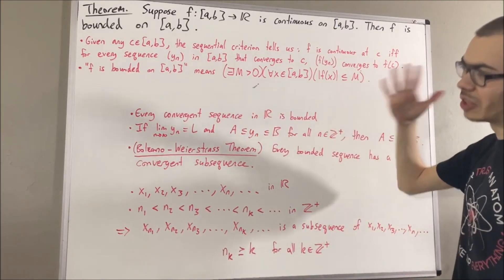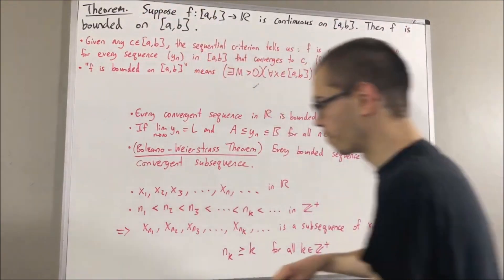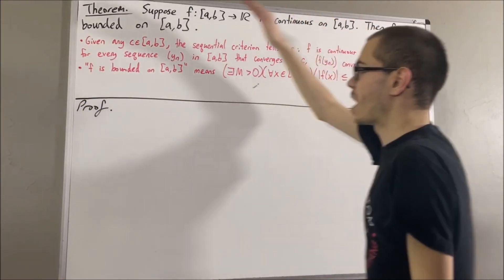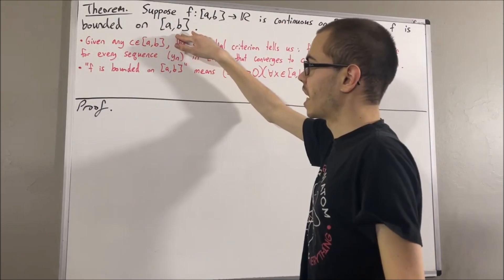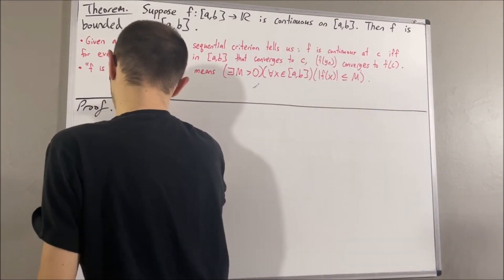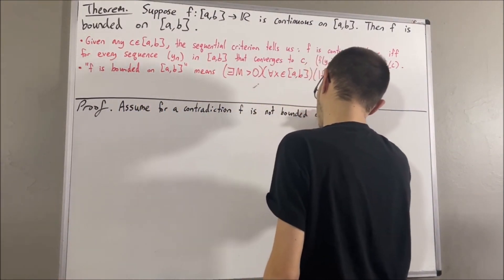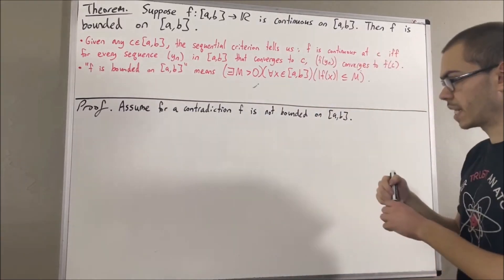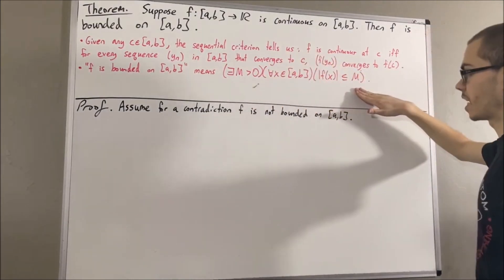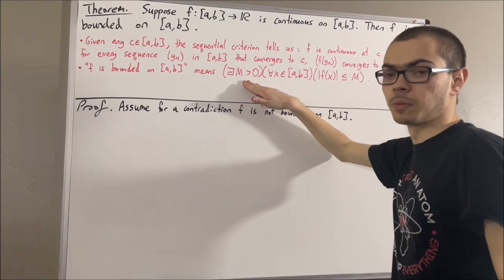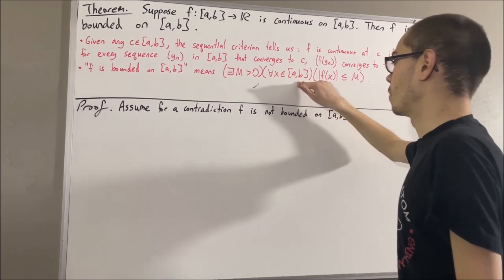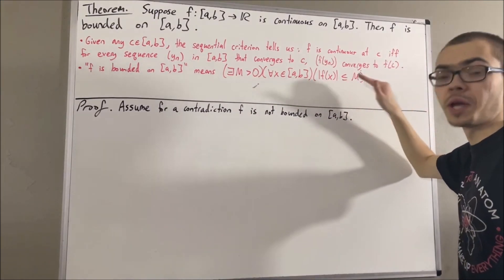Okay, so now let's get into proving this theorem. We're trying to prove that f is bounded on a, b. And to prove that, we'll assume for a contradiction that f is not bounded on a, b.